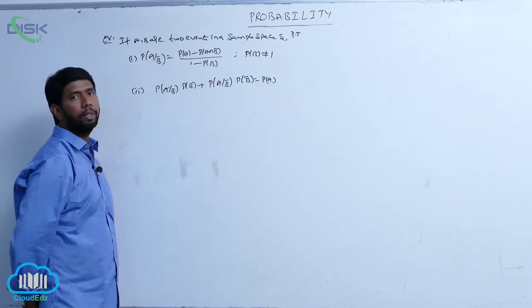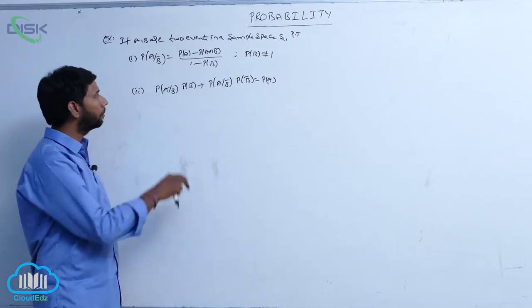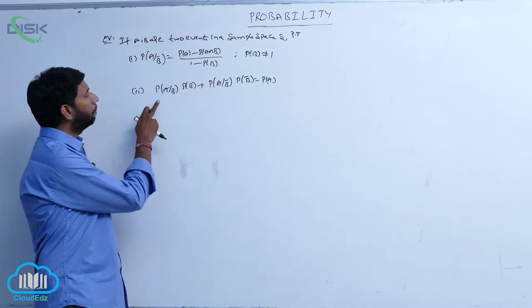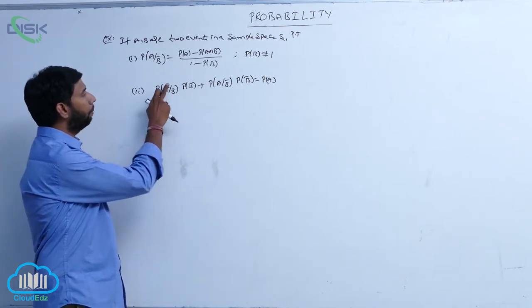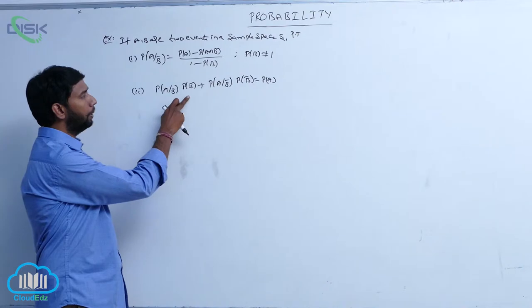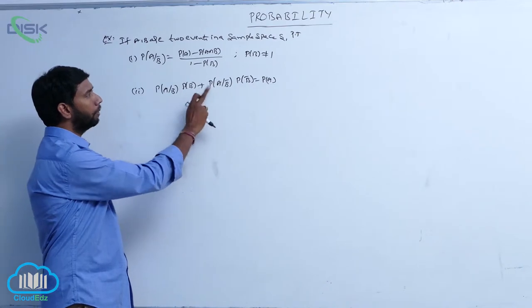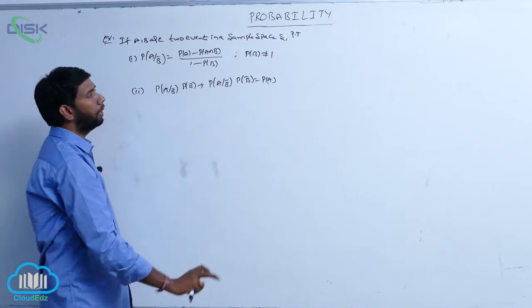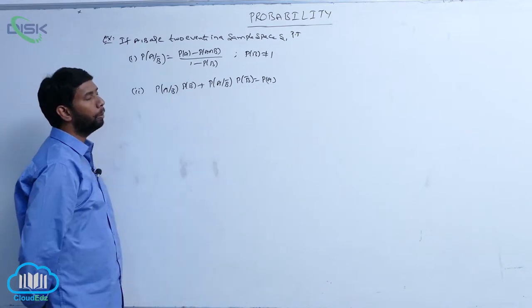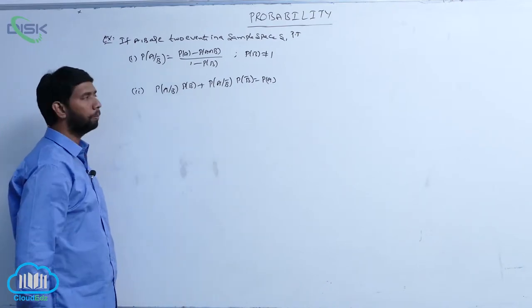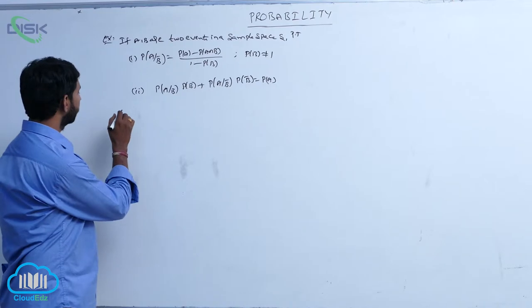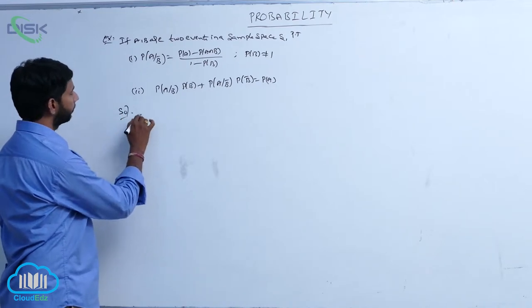This holds when P of B is not equal to 1. Also prove that P of A given B into P of B plus P of A given B bar into P of B bar is equal to P of A. The first one is proven as follows.